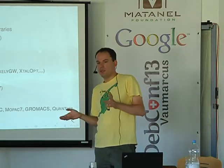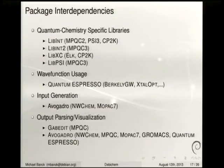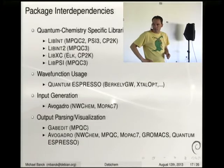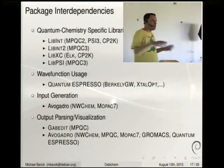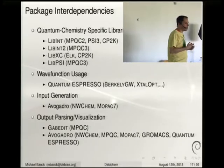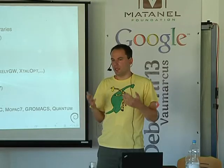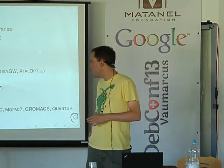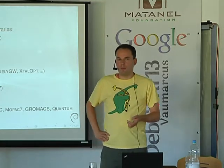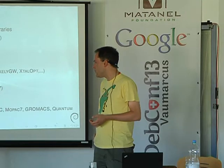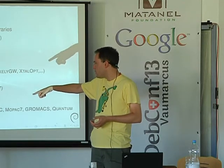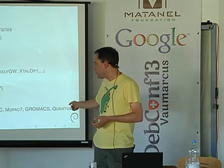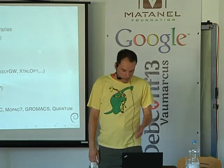We also maintain package interdependencies — a lot of libraries depend on each other and can be used from one or the other, like MPQC versions 2 or 3. An important thing is generating input text files for computational chemistry packages, which is very tedious, so it's nice to have a GUI that generates them for you. For NWCHEM and MOPAC7 we can already do that. We also want to implement that for others. There's also parsing of outputs and visualization — Avogadro mostly does that for many packages, but gapedit is another one.